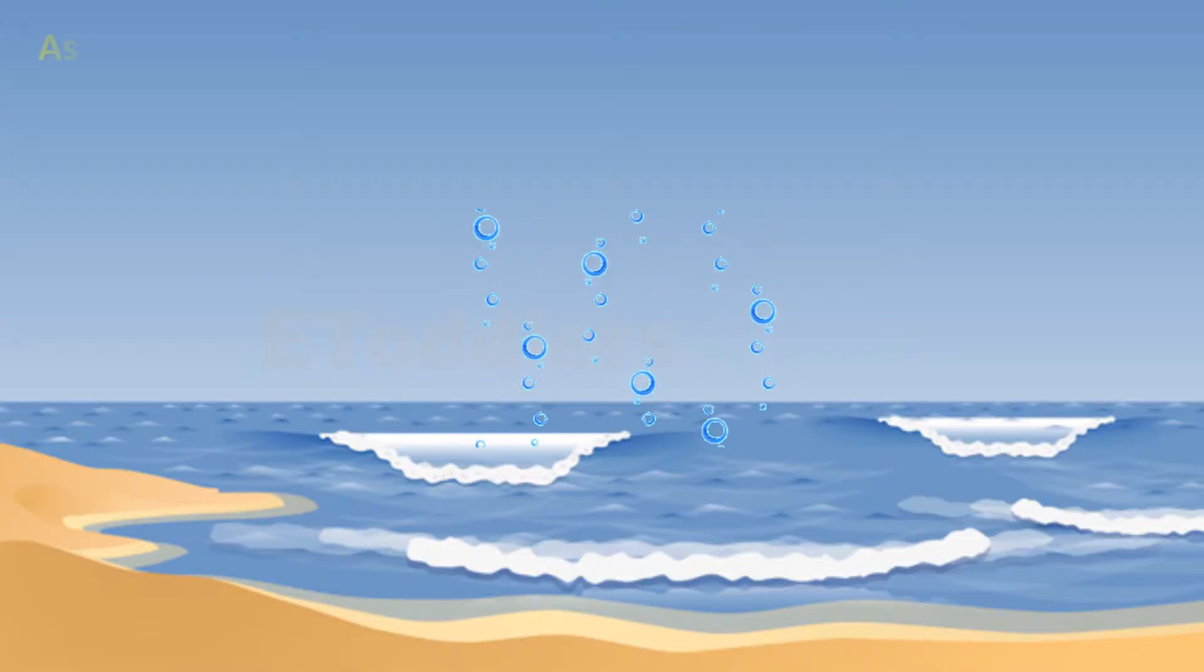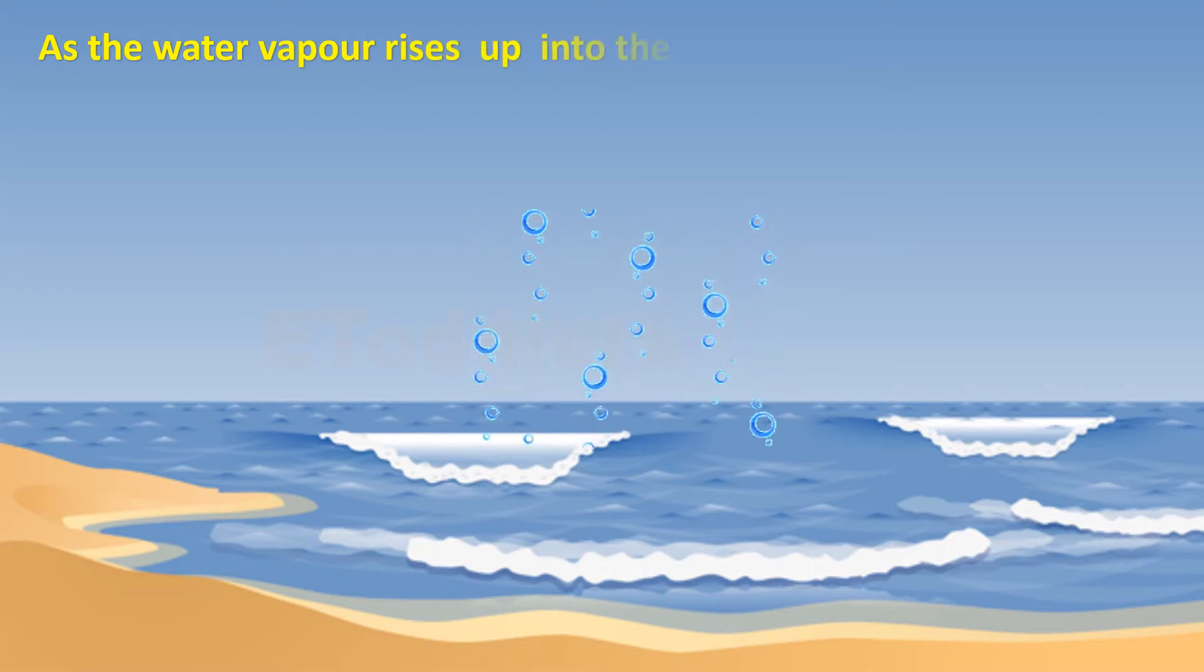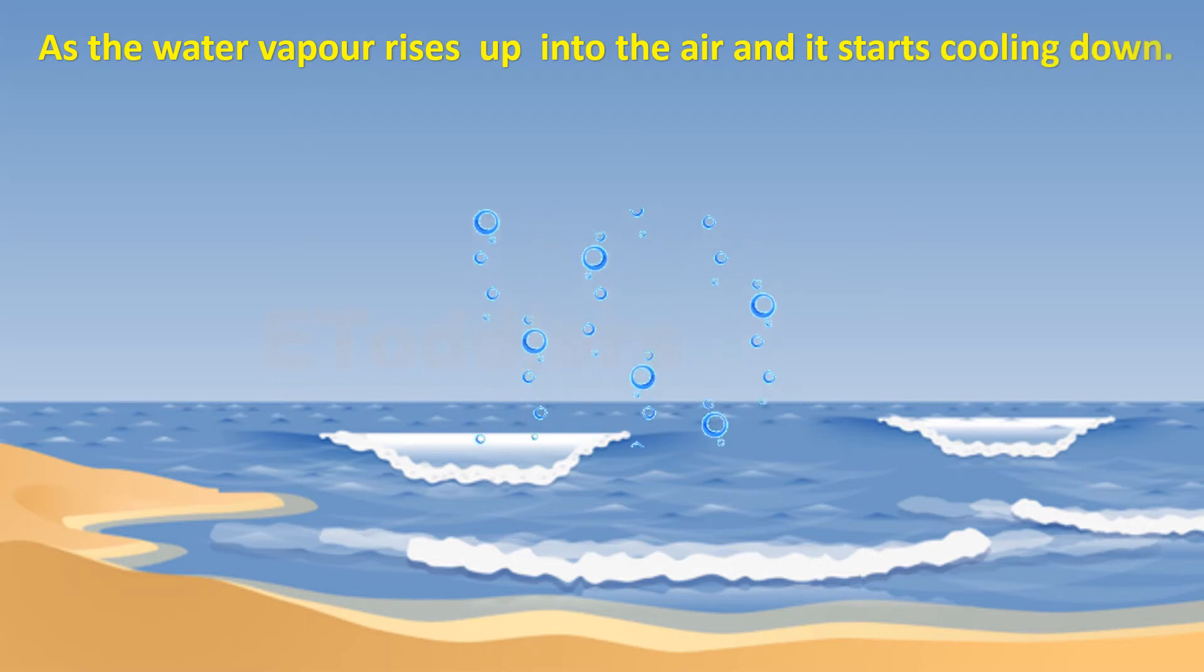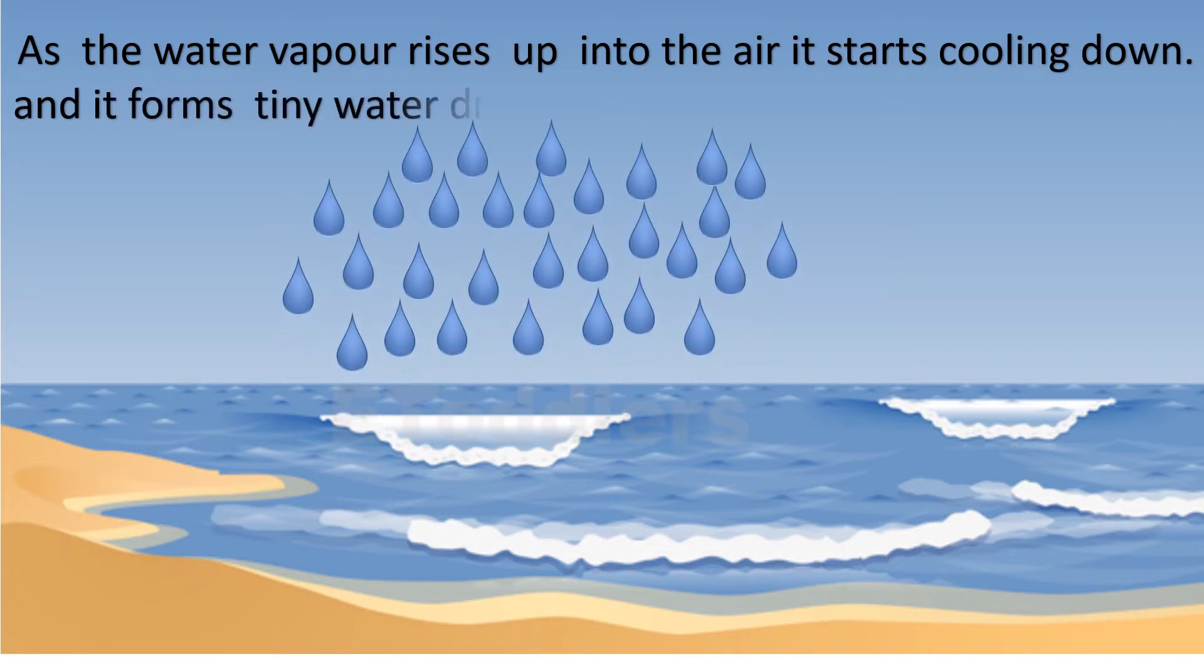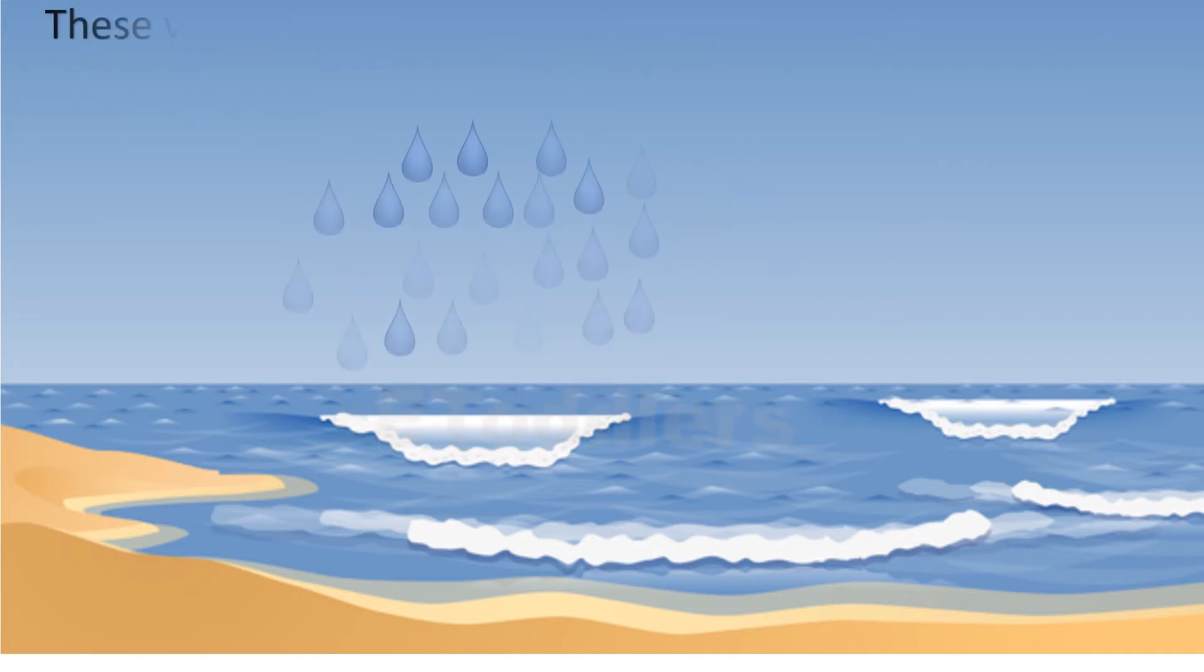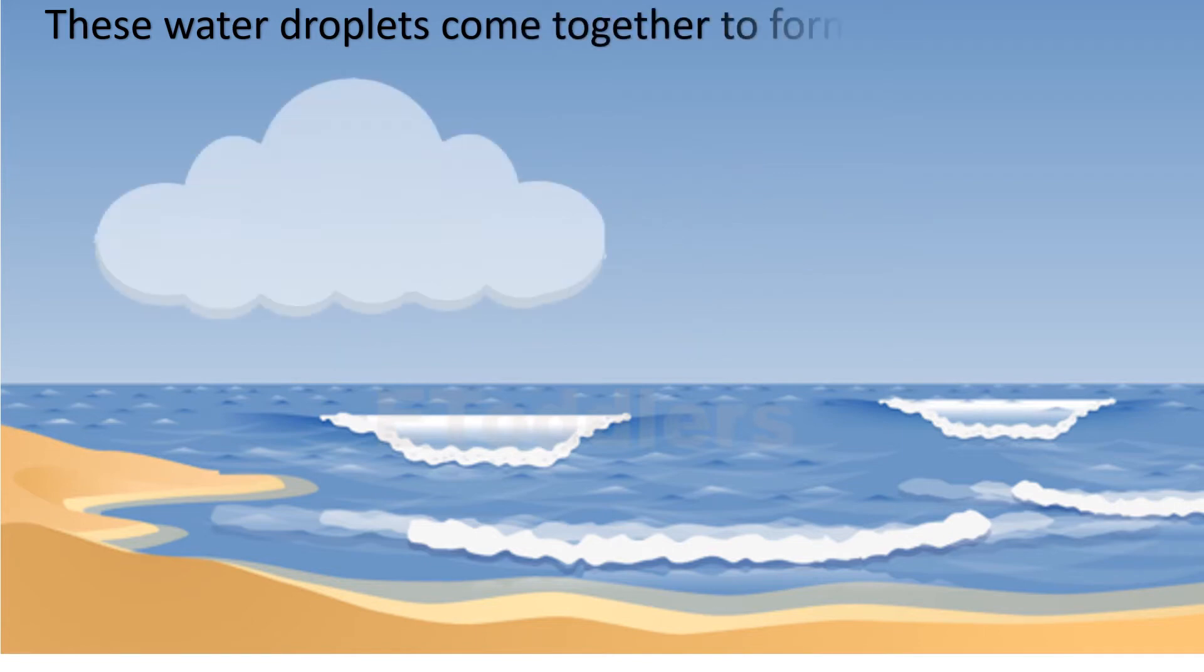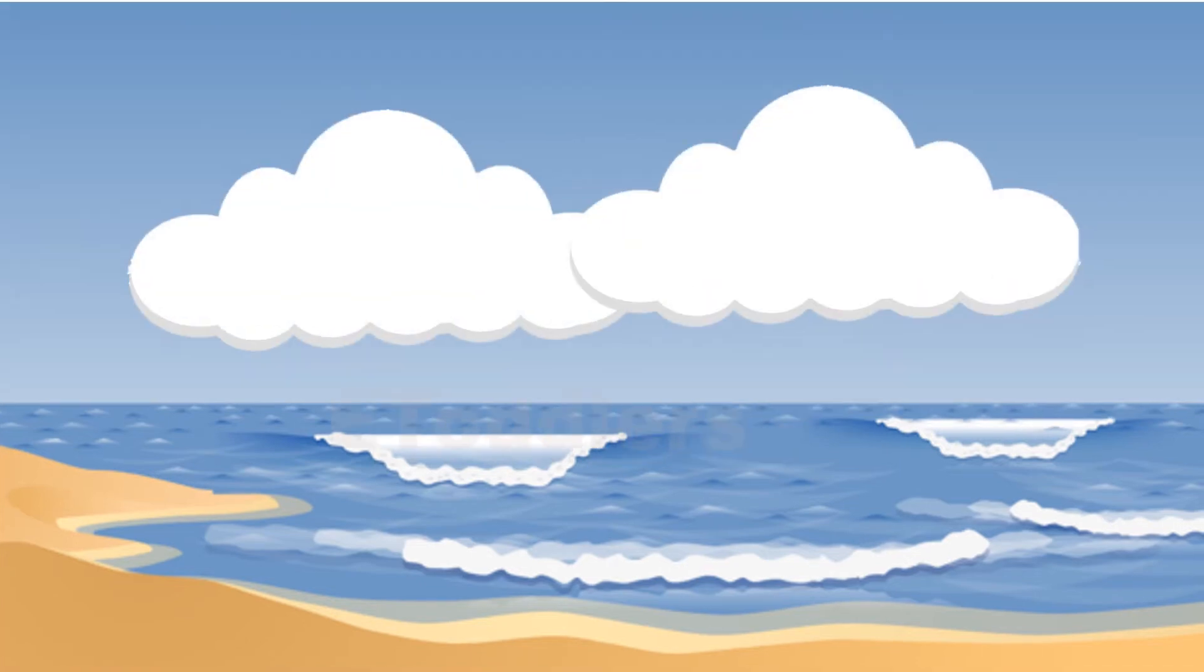As the water vapor rises up into the air, it starts cooling down and forms tiny water droplets. These water droplets come together to form clouds. This process is called condensation.